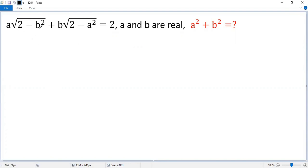Let this part equal x. So we get x equals square root of 2 minus b squared. Similarly, this part as y. So y equals square root of 2 minus a squared.